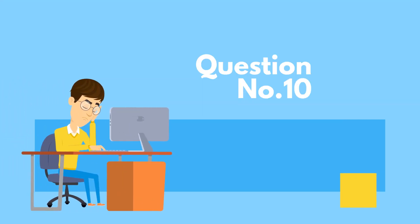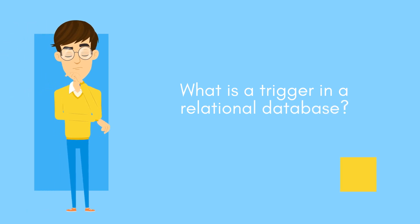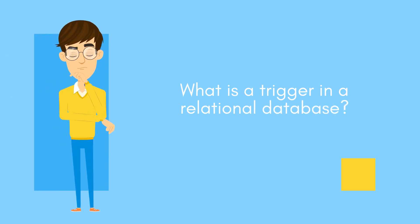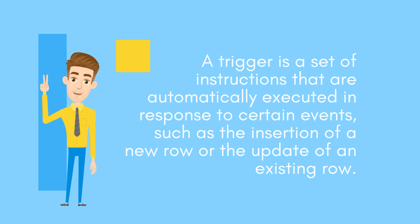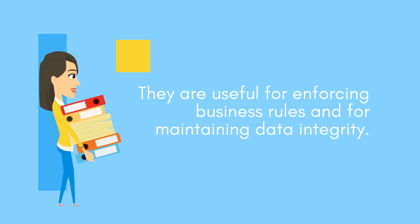Question number ten: What is a trigger in a relational database? A trigger is a set of instructions that are automatically executed in response to certain events, such as the insertion of a new row or the update of an existing row. They are useful for enforcing business rules and for maintaining data integrity.